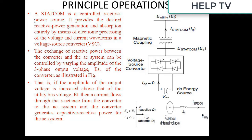The exchange of reactive power between the converter and the AC system can be controlled by varying the amplitude of the three-phase output voltage S of the converter, as illustrated in the figure. If the amplitude of the output voltage S is increased above that of the utility bus voltage E, then a current flows through the reactance from the converter to the AC system and the converter generates capacitive reactive power for the AC system.